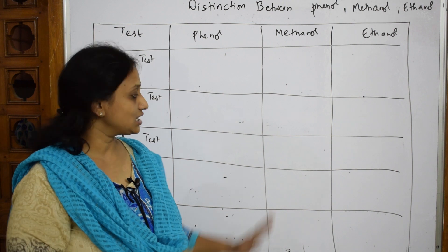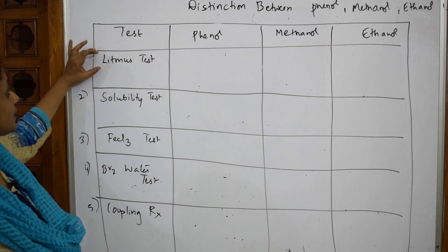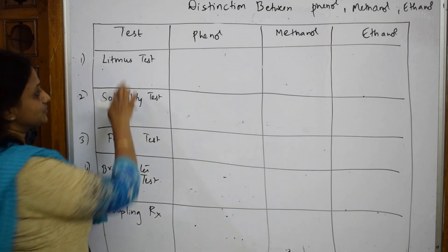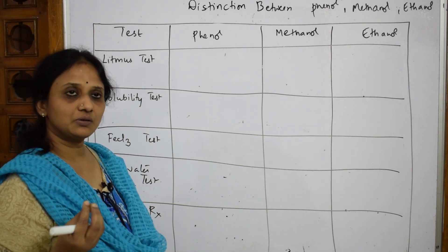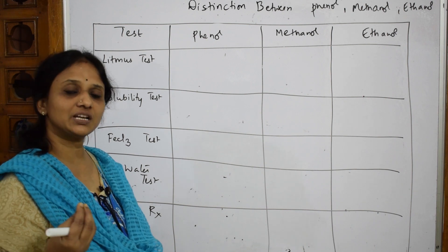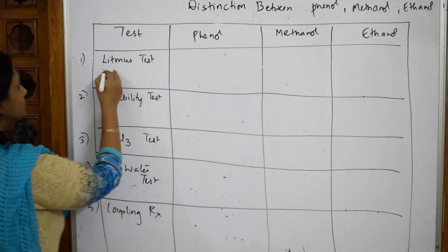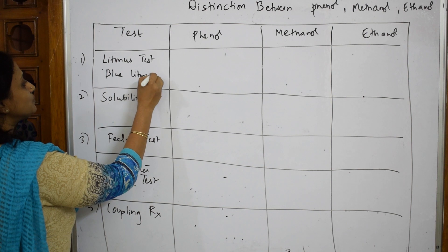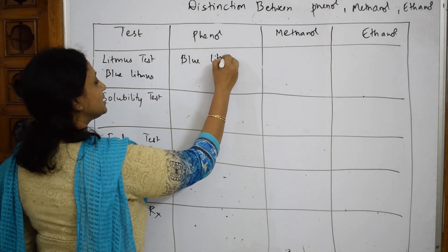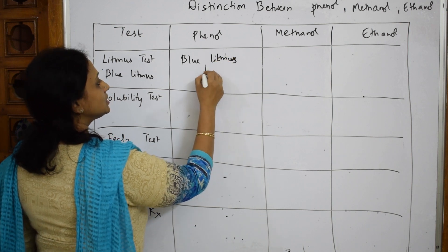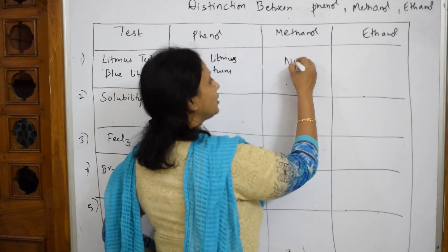I'm going to show you how to write the distinguishing tests in the paper. For the litmus test: take a small amount of the given sample, as you do in your salt analysis or functional group analysis, and dip it in blue litmus paper. When I take blue litmus paper, if it is phenol — being acidic in nature — the blue litmus turns red.